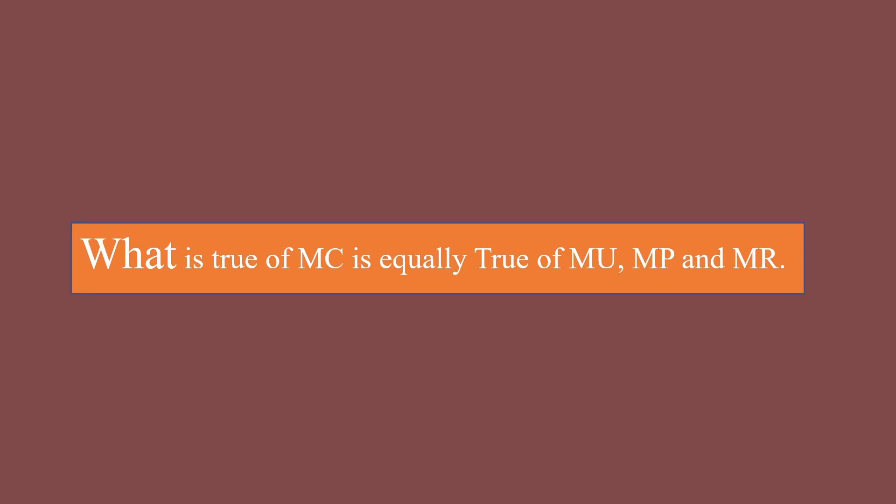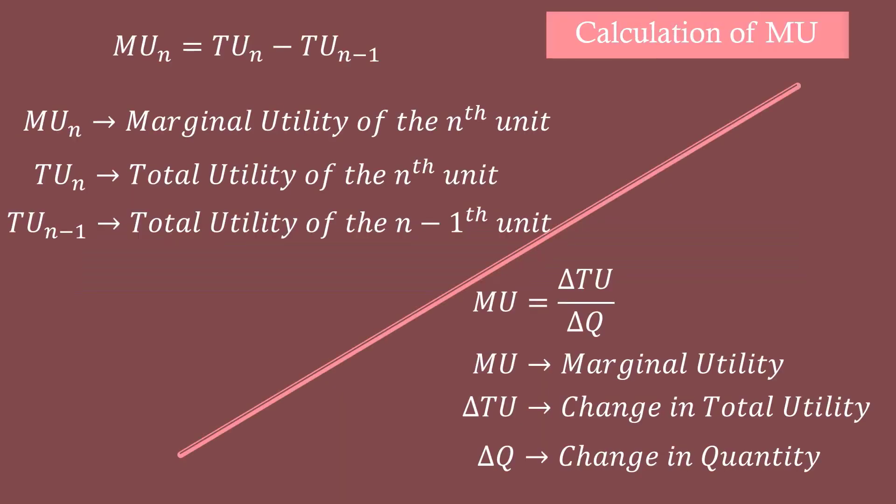marginal product and marginal revenue. You shall use the same technique to calculate marginal utility, marginal product and marginal revenue. Only thing is, you have to change the variables accordingly. Changes that you have to make are highlighted. Watch them carefully. To calculate marginal utility, change the formula like this.